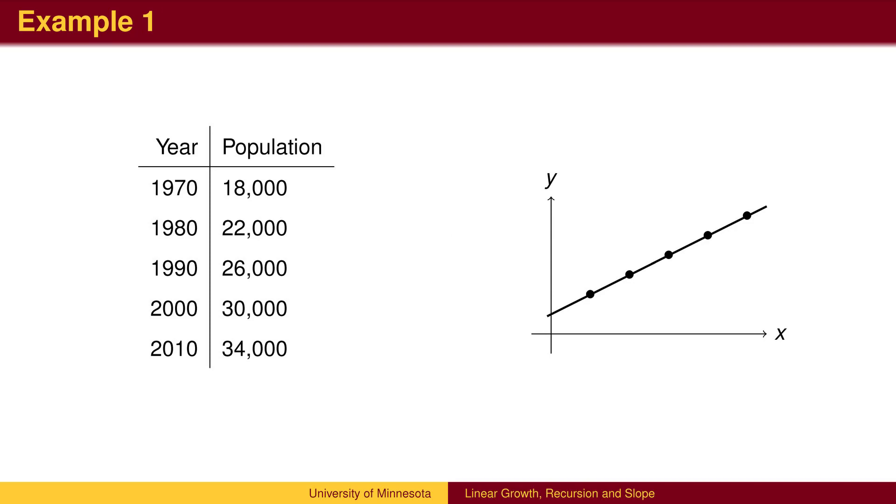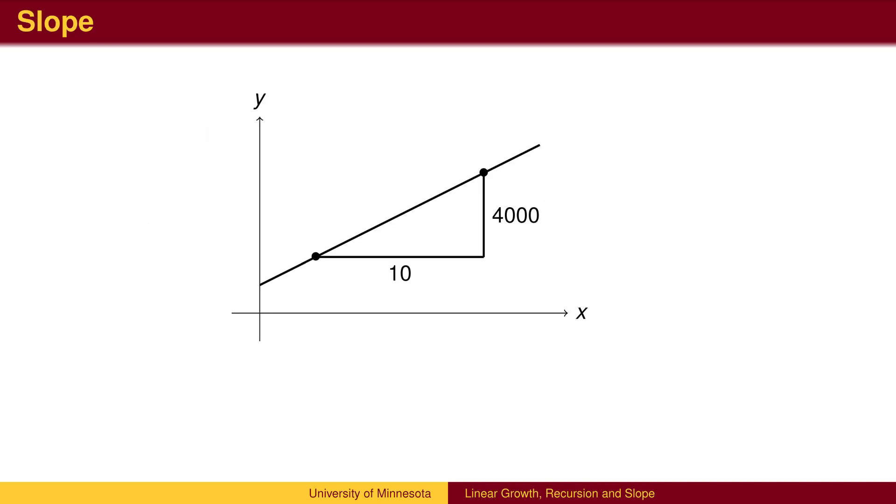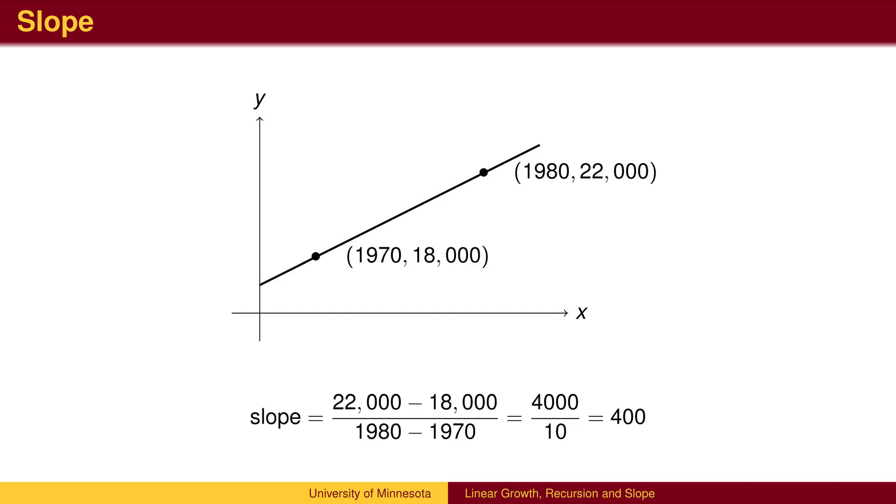When we plot this data, the graph is a straight line. As we move to the right by 10 years, we move up 4000 in population. This rate of change is called the slope of the line. It is calculated by finding the difference in the y-coordinates, the population values, and dividing by the difference in the x-coordinates, the time values.